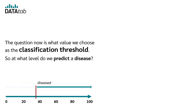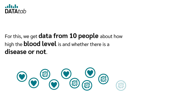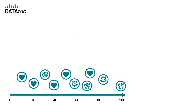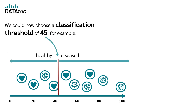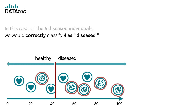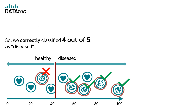At what level do we predict a disease? We get data from 10 people about how high the blood level is and whether there is a disease or not. We could now choose a classification threshold of 45, for example. In this case, of the 5 diseased individuals, we would correctly classify 4 as diseased and 1 incorrectly as healthy. So we correctly classified 4 out of 5 as diseased.